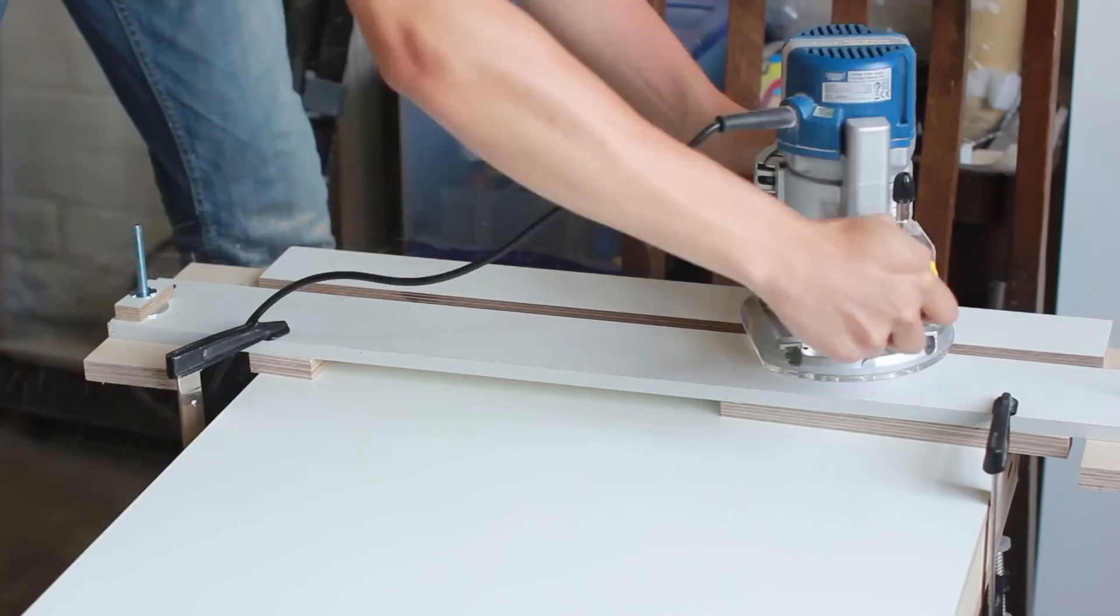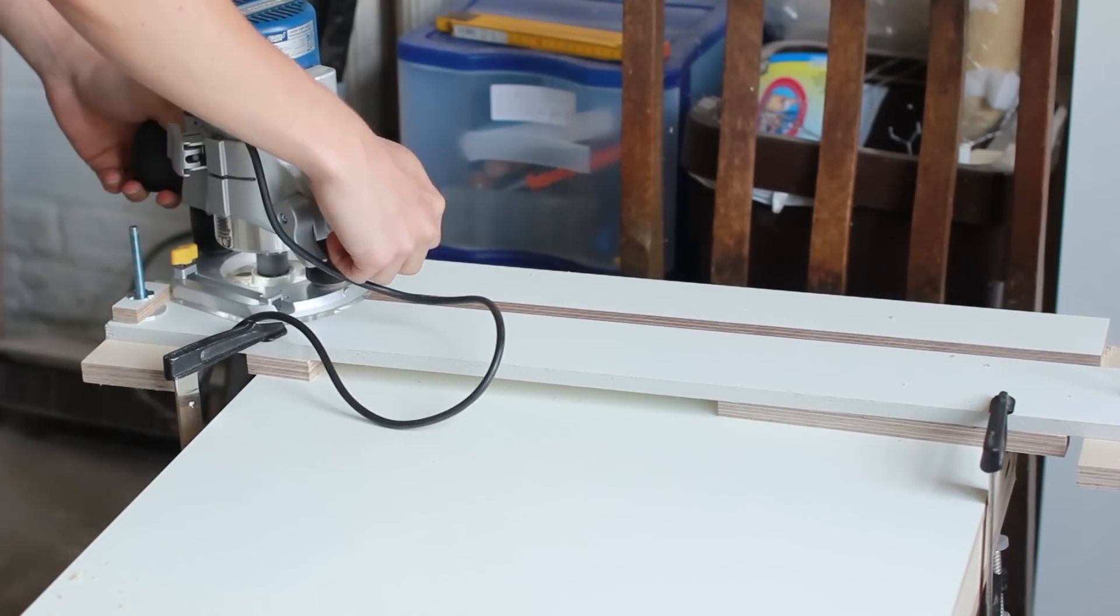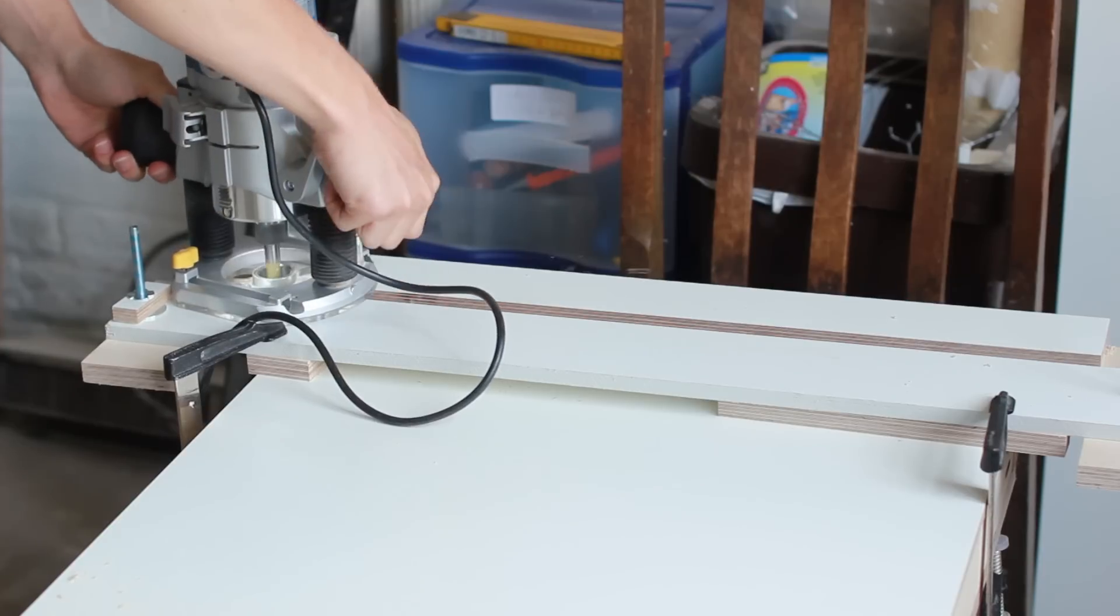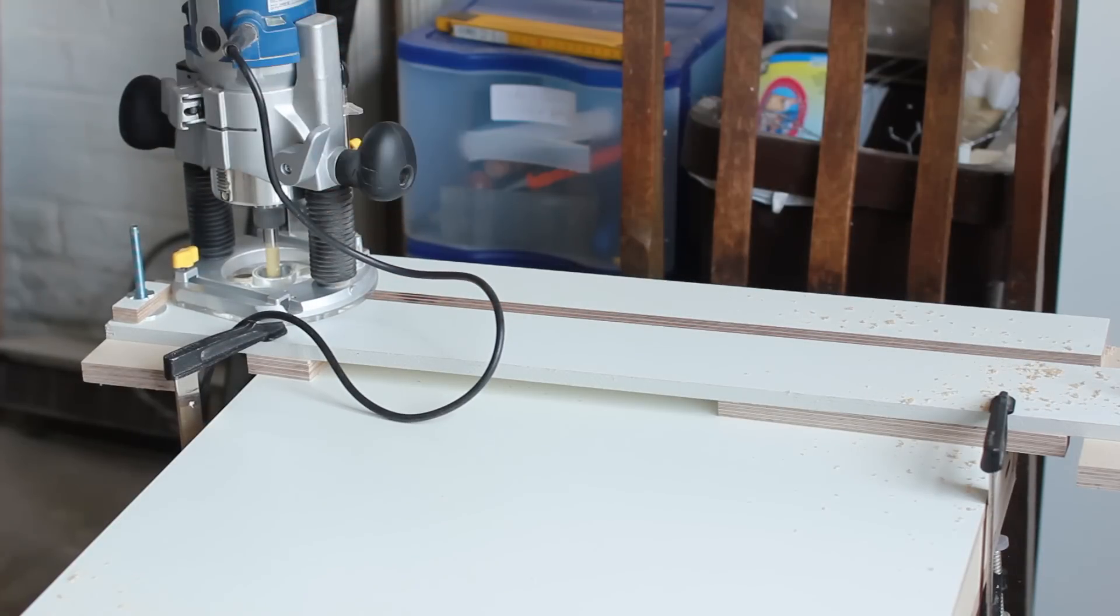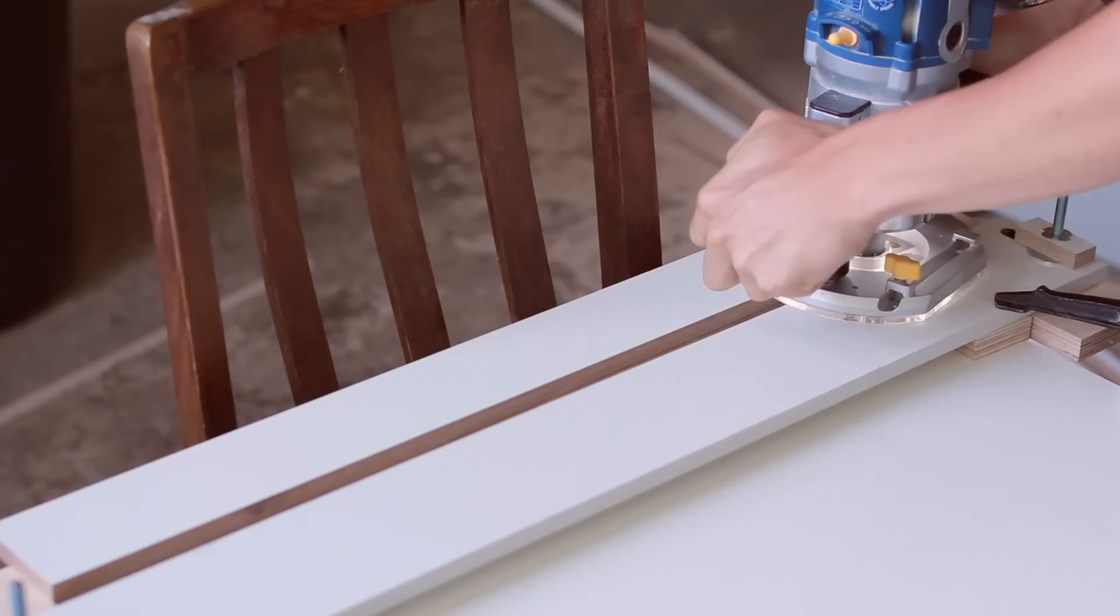I started by cutting dados to accept the upright panels. I did this with my router and the exact width dado jig using a half inch straight bit and a 16mm template guide. The dado is set to 3mm deep and I got the depth by placing a 3mm drill bit under the depth stop with the bit sitting flush on the surface.